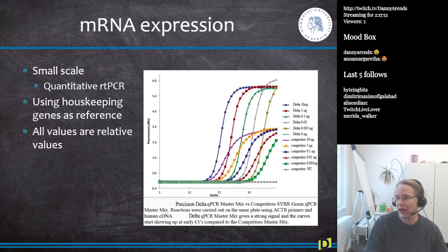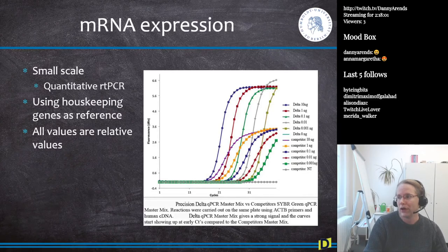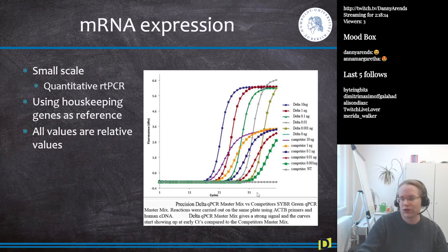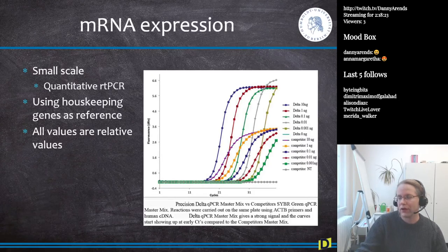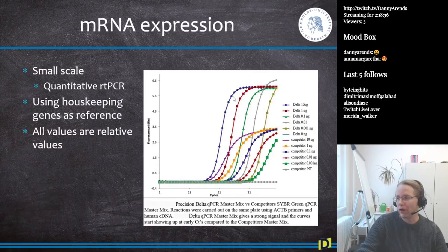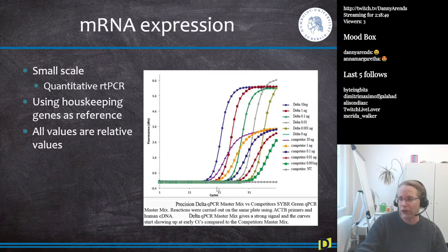Many of you will have done a course where you extract RNA, transform it to cDNA, and then do a qPCR experiment. qPCR experiments are really small-scale experiments — you generally measure one or two genes very accurately. The output looks like amplification curves plotted over PCR cycles. In every round, the available cDNA is amplified using primers, and at a certain point it becomes detectable. The earlier a curve appears, the more RNA there was in the original sample.